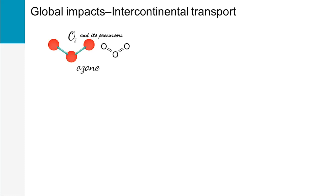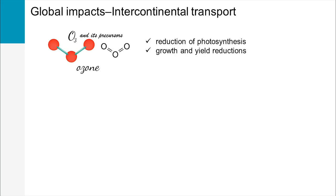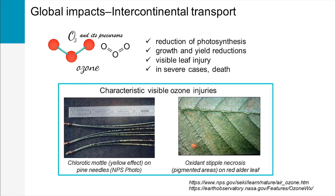Ozone precursors can be transported over long distances and thus ozone can be formed far from the emission areas. It has a significant effect on vegetation, including the decrease of photosynthesis, growth and yield reductions, visible leaf injury and in severe cases, death. These two pictures show characteristic visible ozone injuries on sensitive plant species, like chlorotic mottles on pine needles on the left and stipple on red alder leaf on the right. Moreover, this impairment of photosynthesis by ozone changes the land carbon sink, which contributes to an indirect radiative forcing of climate change.